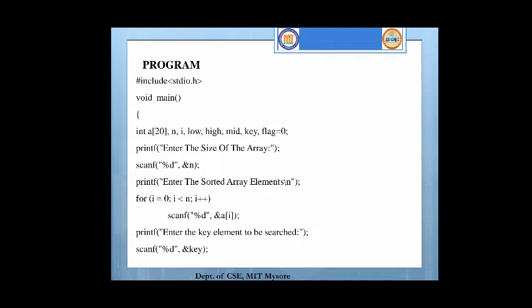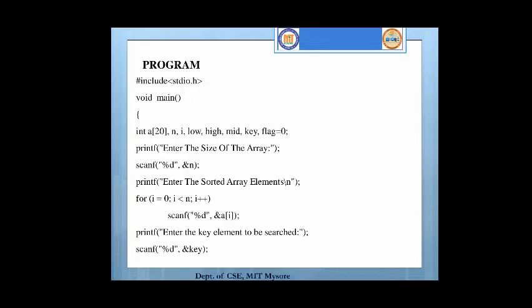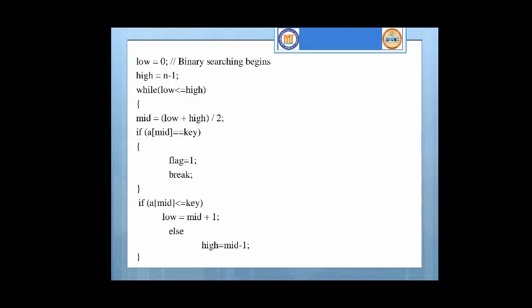And required variables like n, i, low, high, mid, key, flag. The flag is initialized to 0. At first, your program will ask to enter the size of the array and that can be read from your keyboard supported by scanf, that is n. Next, your program will ask you to enter the sorted array elements. By using the for loop, we can read the elements inside the array. And next, it will ask you to enter the key element that you want to search in the array. So that will be read by scanf.